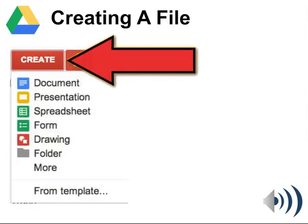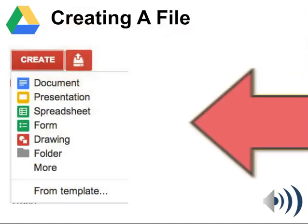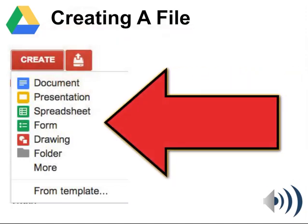When you want to create a file, you click Create. When you click Create you'll see a bunch of choices for all the different things you can create within Google Drive. You can make a document, a slide presentation, a spreadsheet, a form for collecting data, a drawing, or a folder to organize your files.